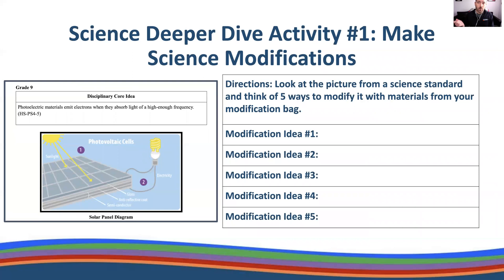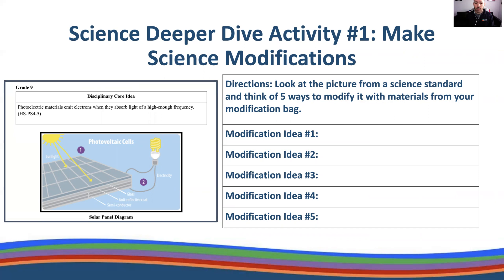Using your modification bag, I want you to think about five ways to modify this so that it's accessible for a student you work with. Getting really quick at thinking about modifications so it's rolling off your tongue — if you know this activity is coming up in two weeks, you're creating a proactive modification. You might also have to make some on-the-fly reactive modifications, but you're getting good at both. Come up with five modification ideas for this activity.